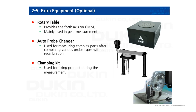Extra equipment is not mandatory, but it is quite useful to have installed on your CMM. A rotary table provides a fourth axis on the CMM. An auto probe changer allows using multiple probes at once without having to calibrate them each time. And a clamping kit is also very useful equipment for fixing complicated shaped parts.